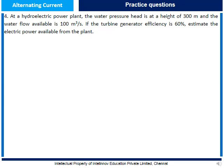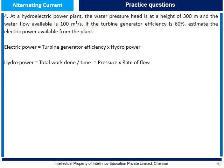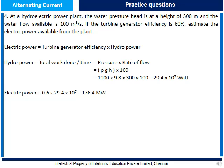Question 4: At a hydroelectric power plant, water pressure head is at 300 m height with flow of 100 m³/s. Turbine-generator efficiency is 60%. Estimate the electric power available. Hydro power equals pressure × flow rate, where pressure equals ρgh. Substituting values gives hydro power equals 29.4 × 10⁷ W. Electric power equals 60% × hydro power equals 176.4 MW.